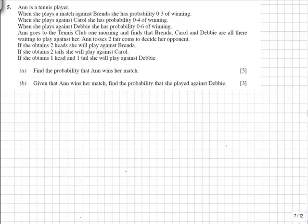In part B of this question, given that Anne wins her match, we need to find the probability that she played against Debbie. So this is the probability of playing Debbie given that she's won.